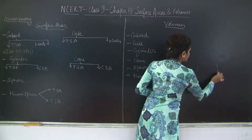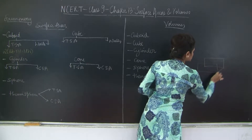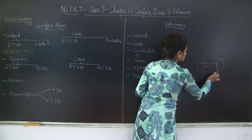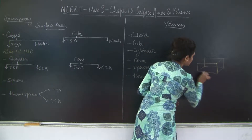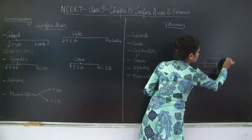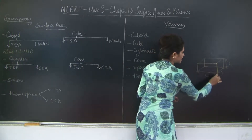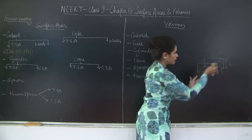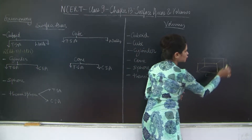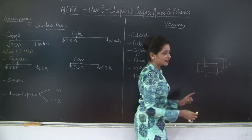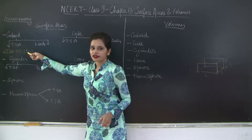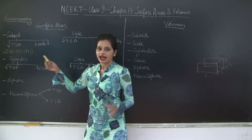Let's look at the rectangular cuboid. This is the length, this is the breadth, and this is the height. For a face in the front and one at the back, the area is length into height — so twice length into height. Similarly, for the side faces you have breadth into height, giving two of those. At the bottom you have length into breadth, giving two length into breadth. So the total surface area is 2(lh + bh + lb).